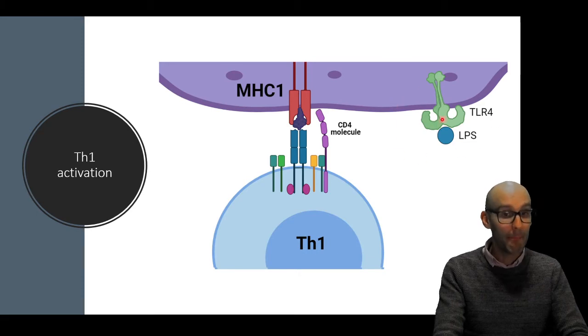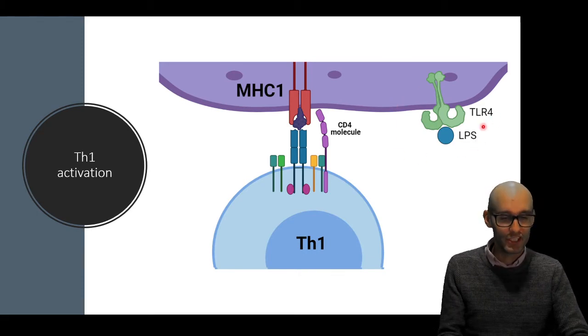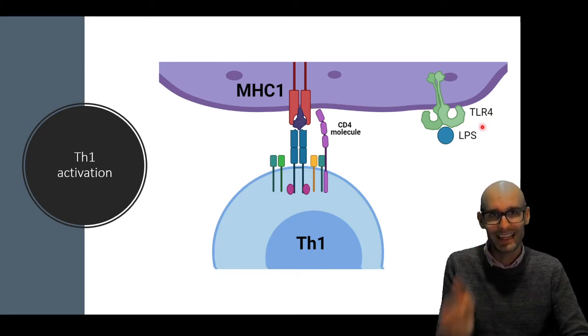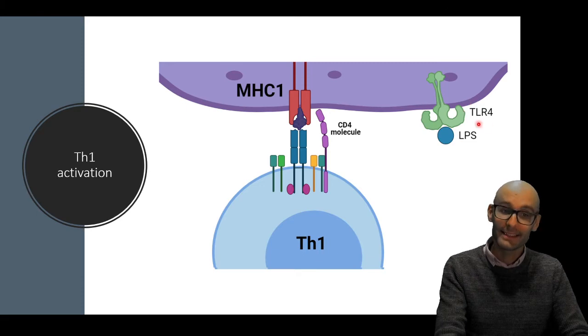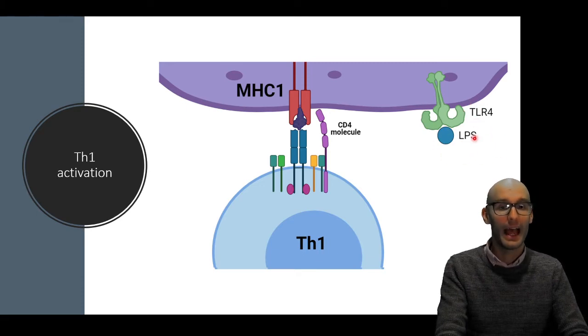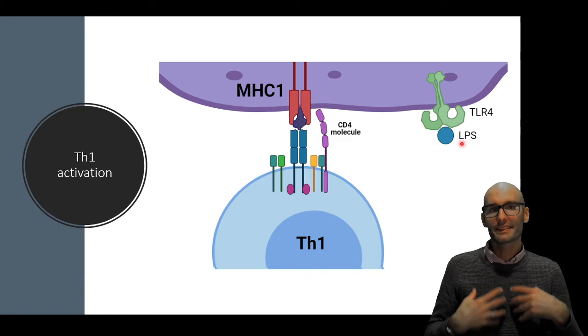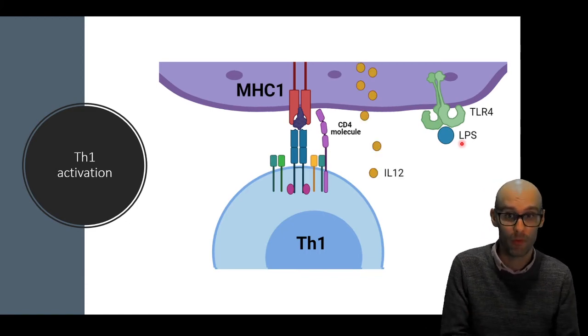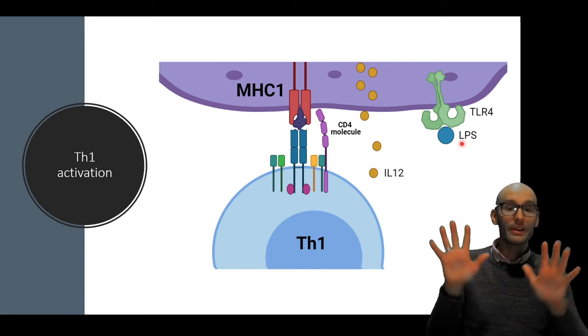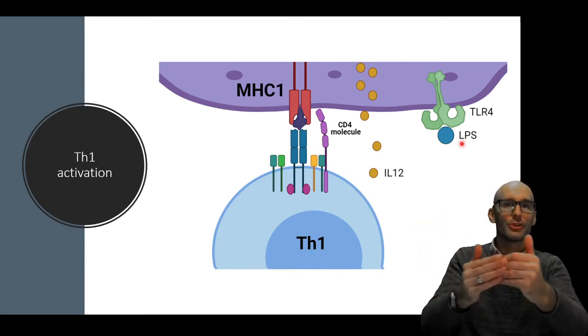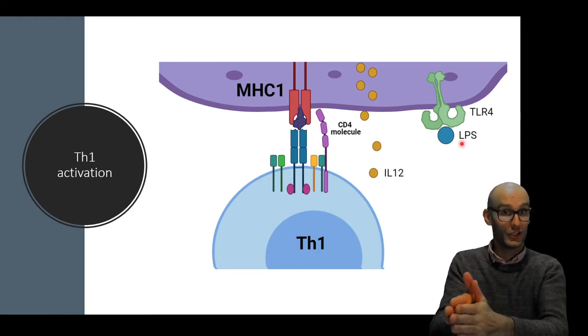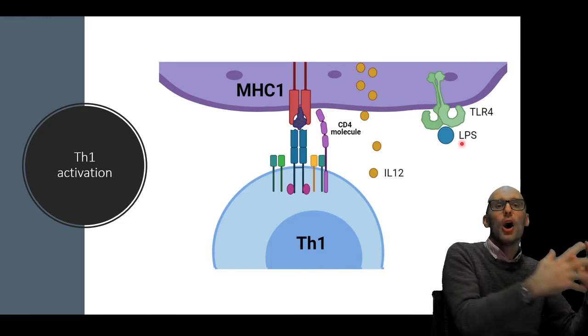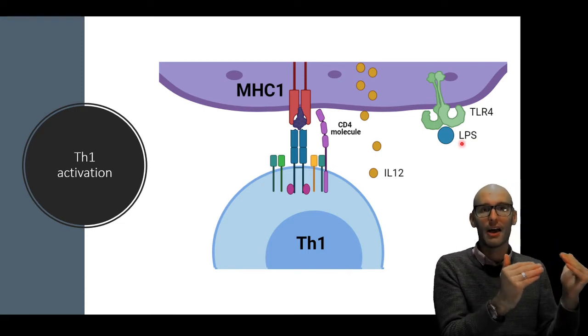Now, if this antigen presenting cell, like a macrophage, for example, had a PAMP-detecting receptor, so a pathogen-associated molecular pattern receptor, a pattern recognition receptor that can detect a PAMP, like TLR4, if it had detected an LPS, it might start to release inflammatory cytokines. And one of these cytokines might be interleukin-12.